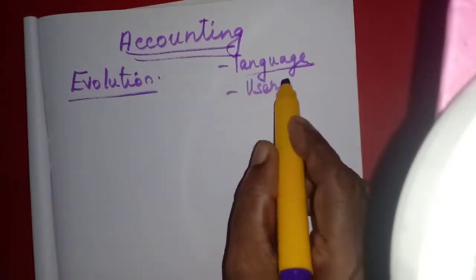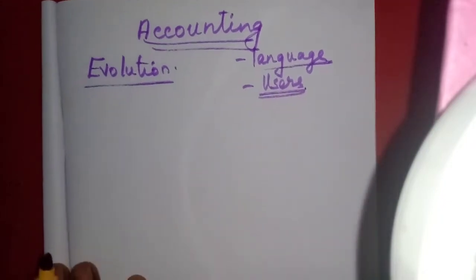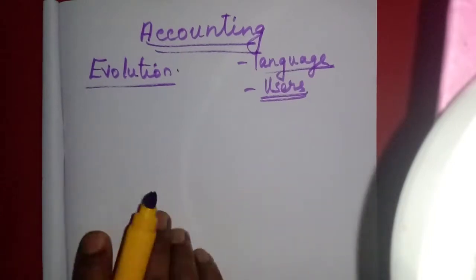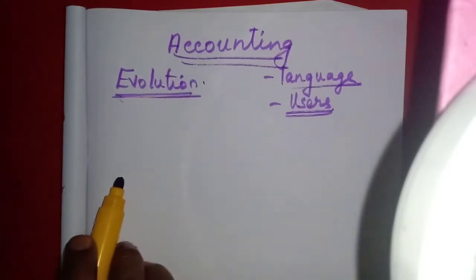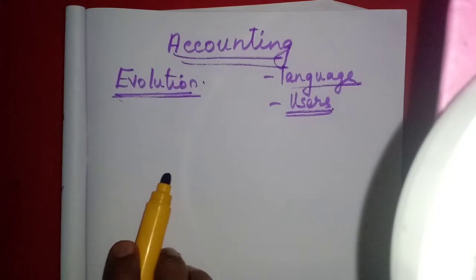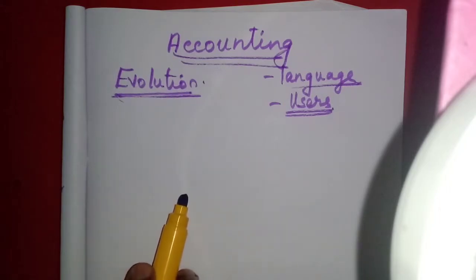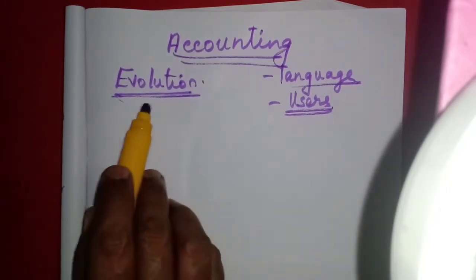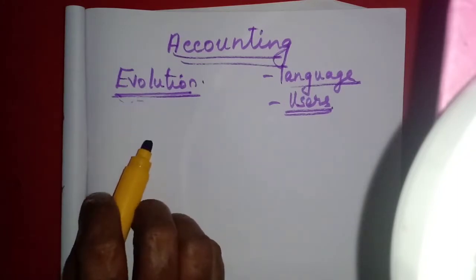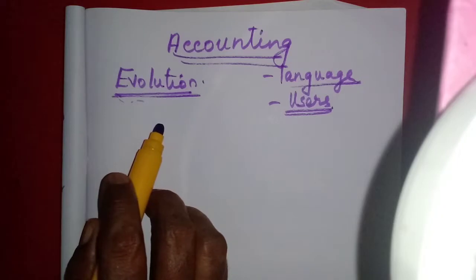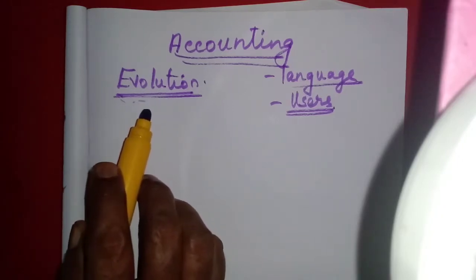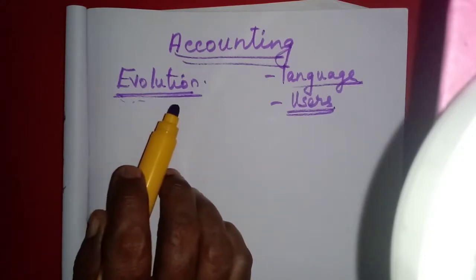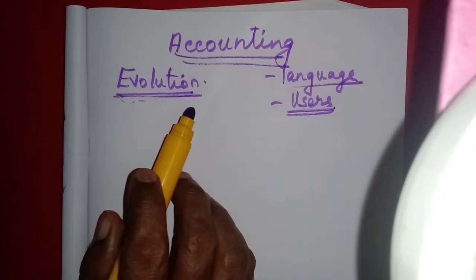We will study these users under a separate heading in the introduction chapter — the first chapter. Now we will come back to this evolution. How this term 'accounting' has been evolved in the whole world, when it came into existence — that is what we are going to learn in the evolution. This is just for your knowledge's sake; you do not need to study by heart. But you should listen carefully, because from this evolution they sometimes ask one-word questions.